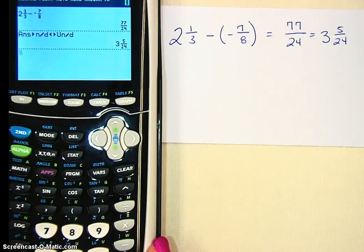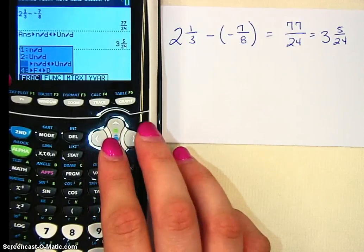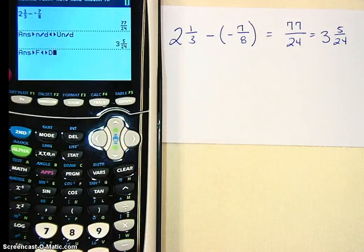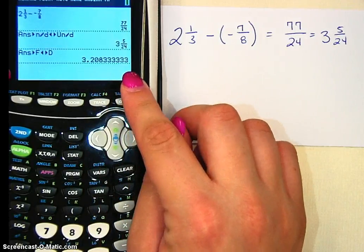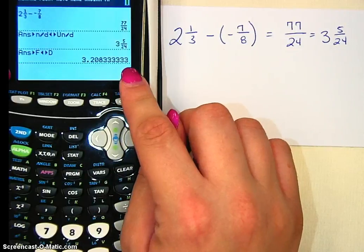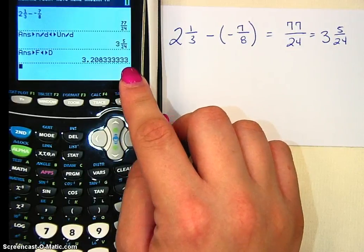Now if you got a decimal, you can change this to a decimal. Hit alpha, y equals, and go down to number 4 to change it to a decimal. And you'll notice it does not have an exact answer. This would not be a good answer in our class.